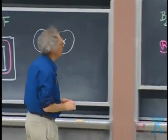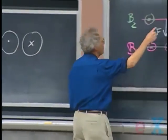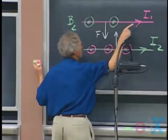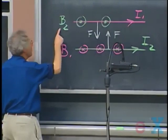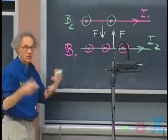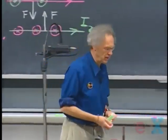remember the right-hand corkscrew rule, then you will see that this force now here must be in the direction of I1 cross with B2. And that's down, which is exactly what I predicted. So the two wires will go towards each other.